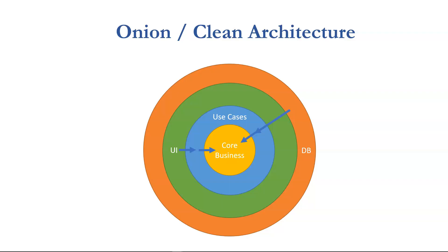Both the core business and use cases layers constitute the core of the onion. The dependency direction is very important — it points inward, meaning that the core depends on nothing, and use cases depend on the core. The use case does not depend on the database, nor the UI, nor anything else. So the use cases encapsulate the business intent — the application intent for the business — and only depend on the core business layer. The UI points to the use cases. But here's a weird thing: the database also depends on the use cases as well as the core business. How does that work?